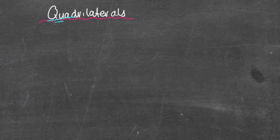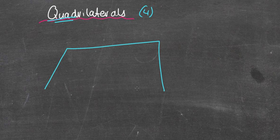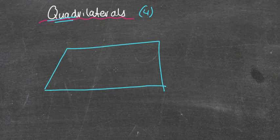So what is a quadrilateral? Hopefully you know that the word 'quad' probably means four — like quad bikes. So it means a four-sided shape, any four-sided shape. And there are lots of different types of four-sided shapes which we'll go into depth later on, like squares and rectangles and parallelograms, trapeziums, etc.